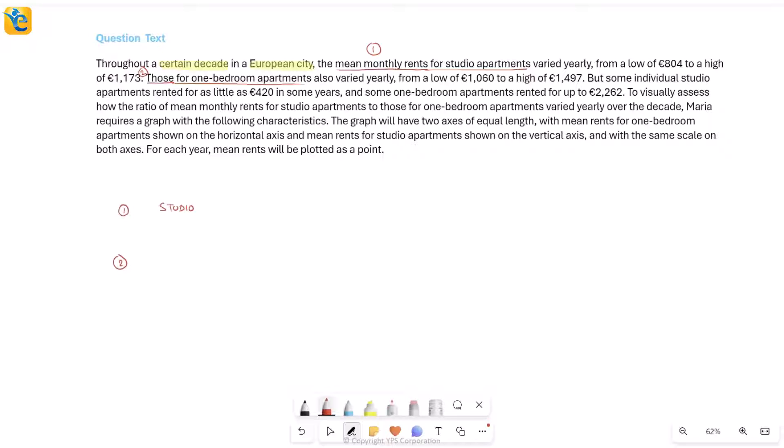Second is mean monthly rents for one bedroom apartments. I'm going to write down the information we have about them one by one. If I look at the first category, the studio apartments, they are saying that this mean monthly rent varied yearly. For a certain year, this average monthly rent was a constant. Then for another year, this was a different constant and so on. Now they're saying this varied from a low of 804 to a high of 1173 euros. So I'm just going to write the low and the high values. We are talking about the mean monthly rent and we have our values here.